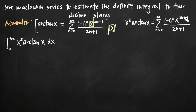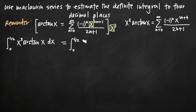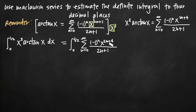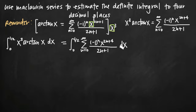In order to use this series to estimate our definite integral, all we need to do is set our definite integral equal to the integral from 0 to 1/2 — our original interval — of our series: the sum from n equals 0 to infinity of negative 1 to the n, x to the 2n plus 4, all divided by 2n plus 1, dx. To get an estimate of the integral on the left-hand side, we only need to evaluate the integral on the right-hand side. We're integrating with respect to x.